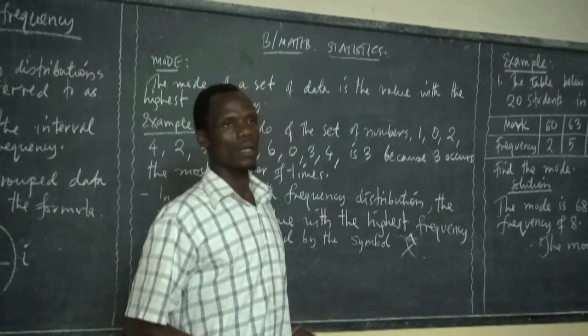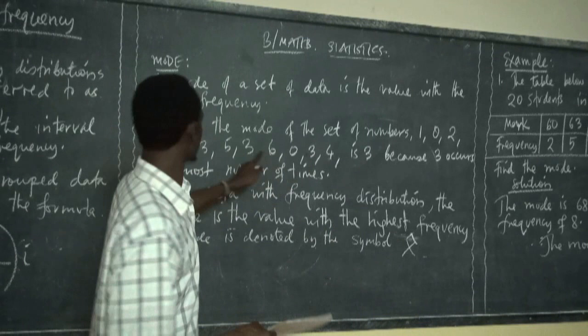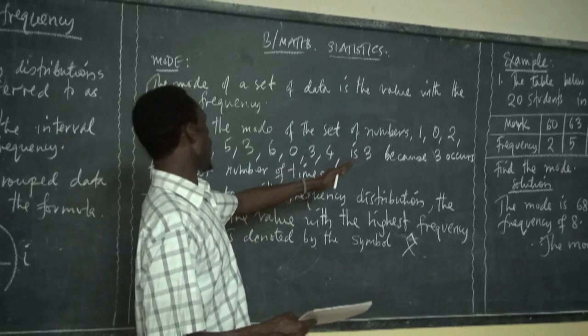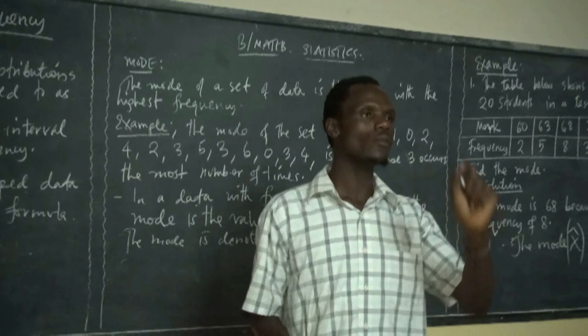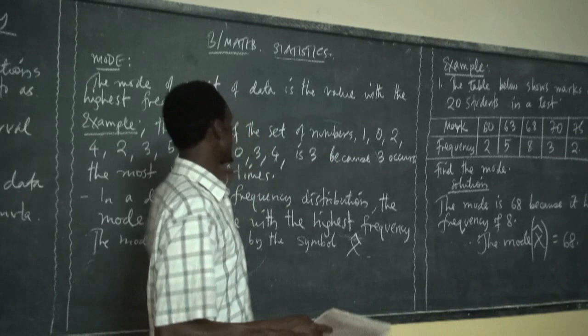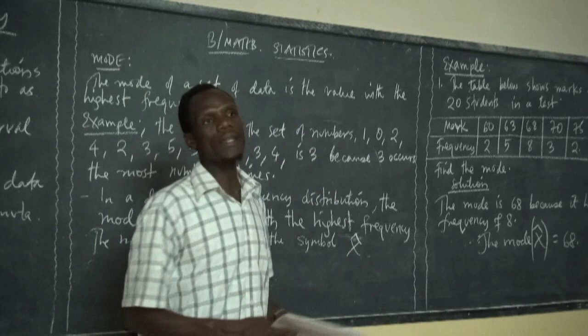Why is it 3? Because it appears more times than the others. 3 is here, 1, 2, 3 — it occurs the most number of times. If you were to write the frequency of these numbers, you would write 3 with the highest frequency, and that is called the mode.